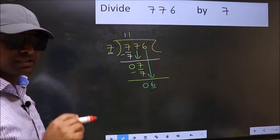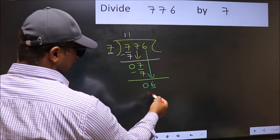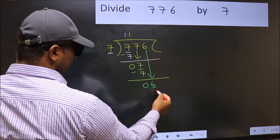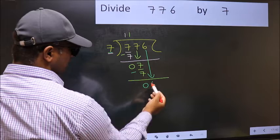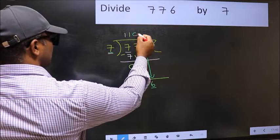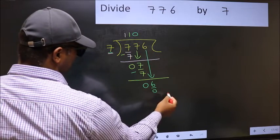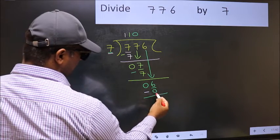Instead, what you should think of doing is which number should be right here. If I take 1, we will get 7. But 7 is larger than 6. So what we should do is we should take 0. So 7 into 0, 0. Now you should subtract. 6 minus 0, 6.